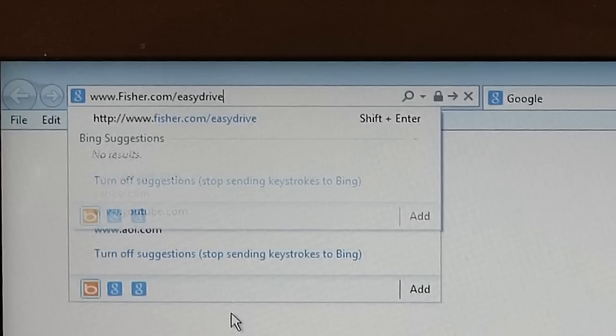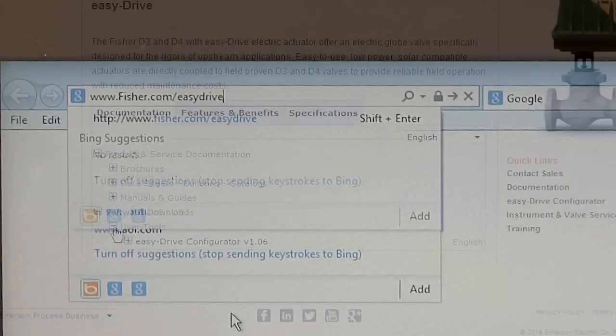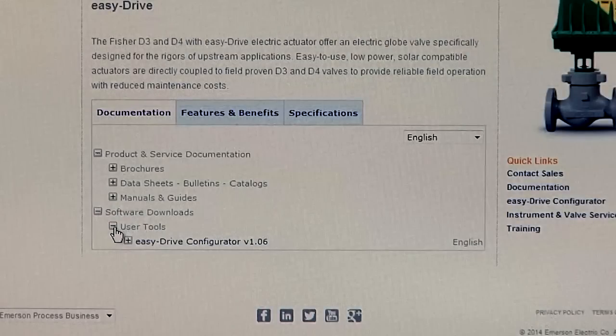The EZ-Drive configuration software can be found by going to www.fisher.com/EZ-Drive. On the EZ-Drive webpage, click on User Tools to find the free download.